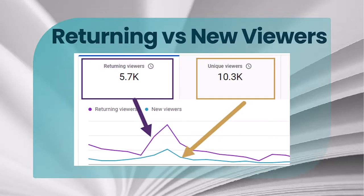In this example, we're highlighting a particular time frame. You had 5,700 returning viewers and 10,300 unique viewers. The unique viewers is shown in blue, and the purple line on the timeline is your returning viewers. Ultimately you want to keep on bringing your returning viewers back and then adding to your total reach with your unique viewers in that time frame.